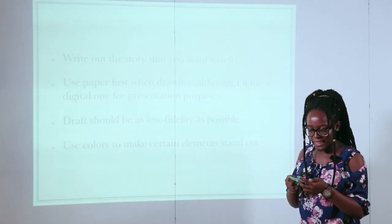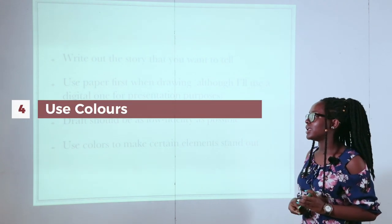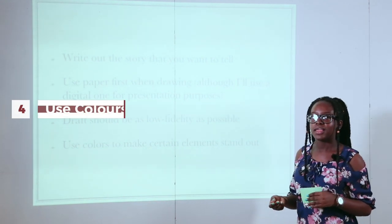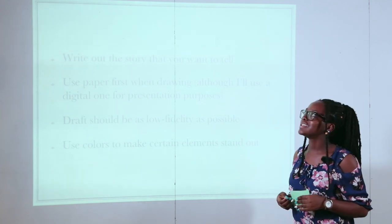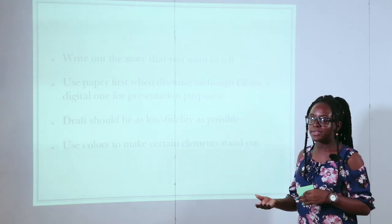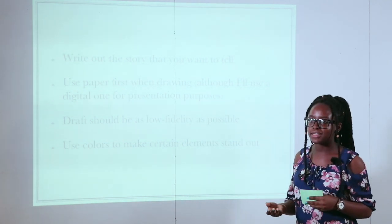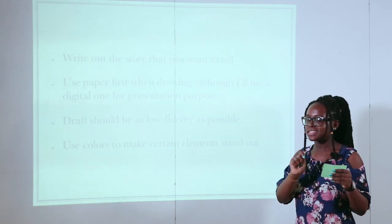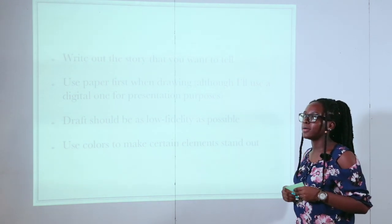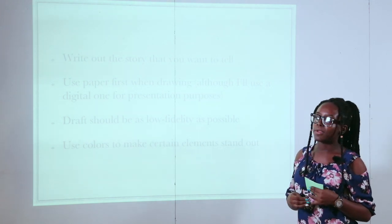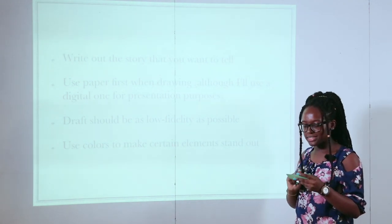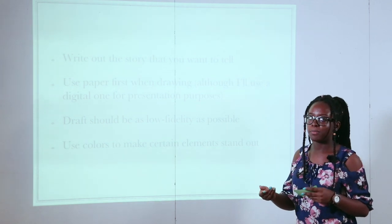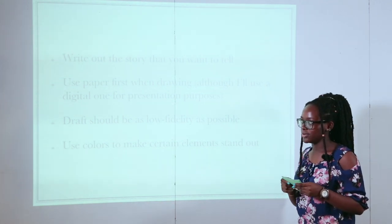It doesn't make sense to exert all your energy into one storyboard only to rip it up and start a new one. The final tip is to use colors. So if there's something in your storyboard that you want to stand out — like if you're selling a bar of soap and you want people to know that it smells really nice — you can use colors to emphasize that. So whenever you're making the advertisement for the soap, you know that 'smells really nice' is the selling point of your product, and you focus more on it.